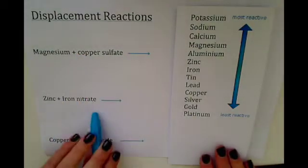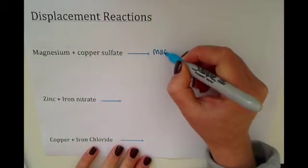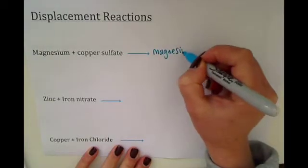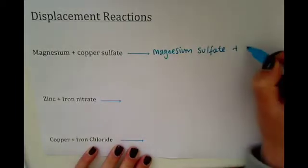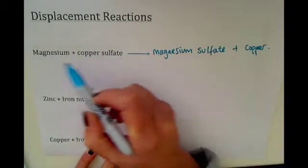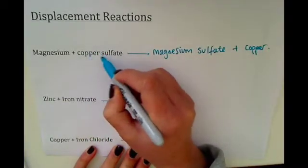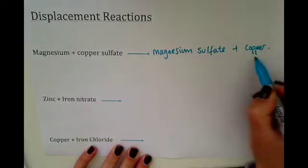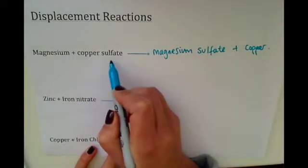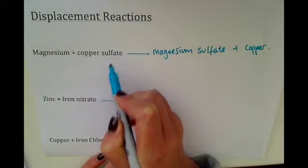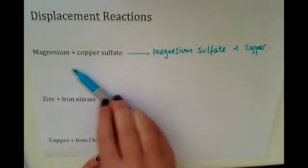It will come in and displace or kick out the copper. So if we were to complete this word equation, we'd be left with magnesium sulphate plus copper. Because the magnesium, the more reactive metal, comes in and kicks out the copper. So the copper is left on its own, and then the magnesium is bonded to the sulphate. So you're just swapping these two words around.